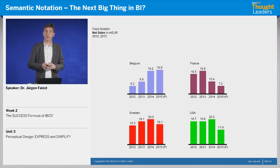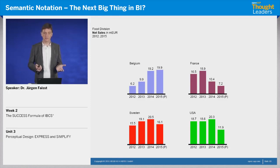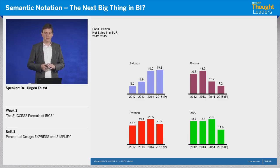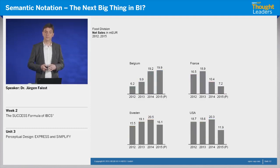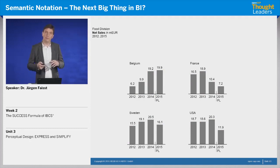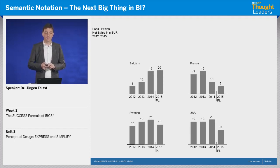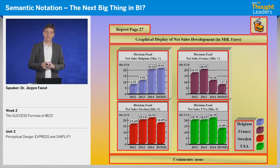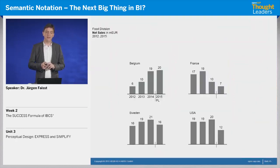Then we have another frame — we get rid of that. And the best is yet to come: is there a need for those four colors? No, because the countries are already labeled — Belgium, France, Sweden, and the US. So we can get rid of the color. And maybe we can do a little more semantic work and reduce one more digit. If you compare this simplified version to the original one, it's really a big, big difference.